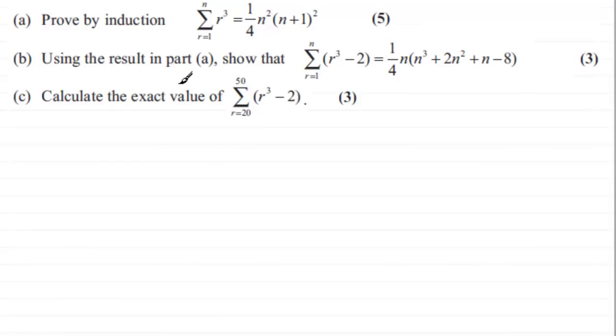And then we've got to calculate the exact value of sigma r cubed minus 2 going from r equals 20 to 50. So if you haven't tried this already and you want to give it a go, just pause the video, come back when ready, and you can check your work solution with mine.